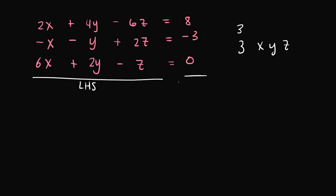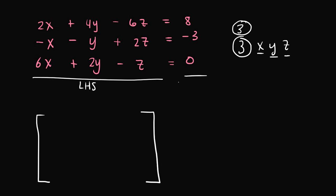Since we have three equations, we're going to have three rows, and since we have three unknown variables, we're going to have three columns. So let's set that up. We're going to have this matrix here — one, two, three rows, which corresponds to the three equations, and one, two, three columns, which corresponds to the unknown variables.